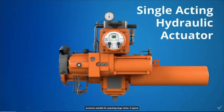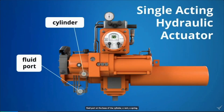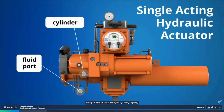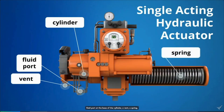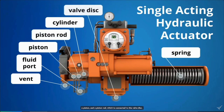A typical single-acting hydraulic actuator consists of a cylinder, a fluid port at the base of the cylinder, a vent, a spring, a piston, and a piston rod, which is connected to the valve disc.